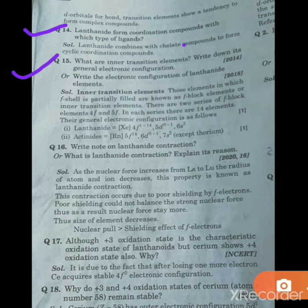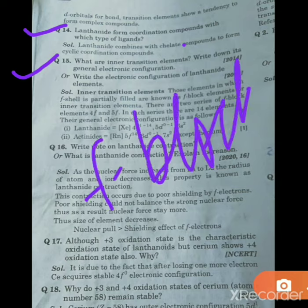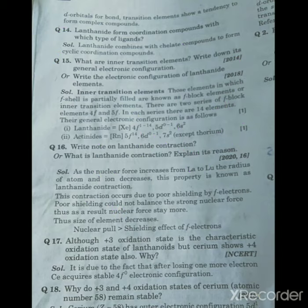Students, we have discussed this in the previous lecture. Inner transition elements are what is called f-block elements. If we talk about general electronic configuration, they are two series: lanthanide series and actinide series.